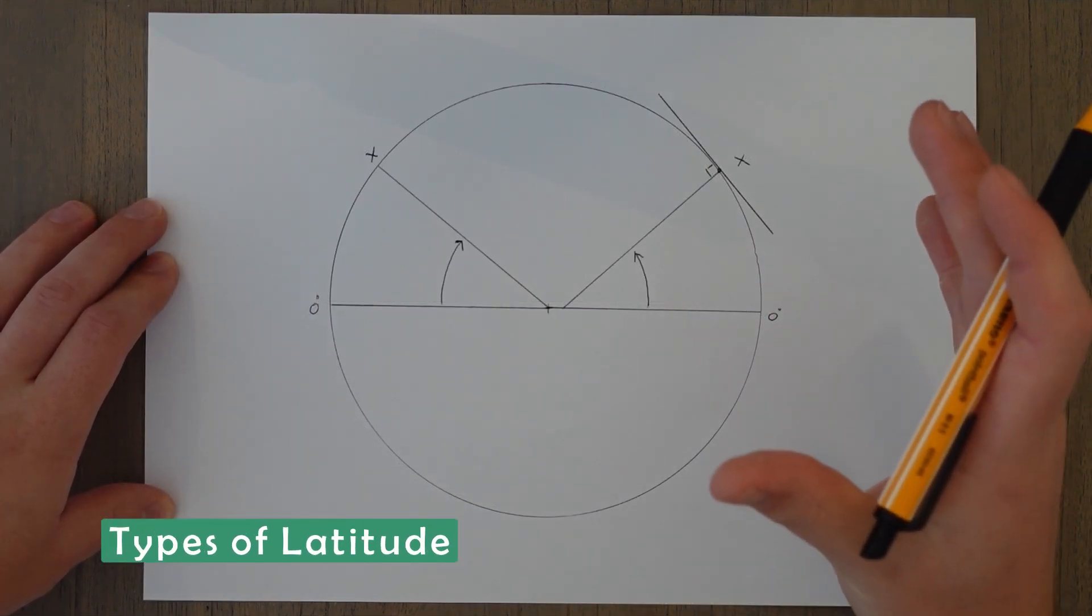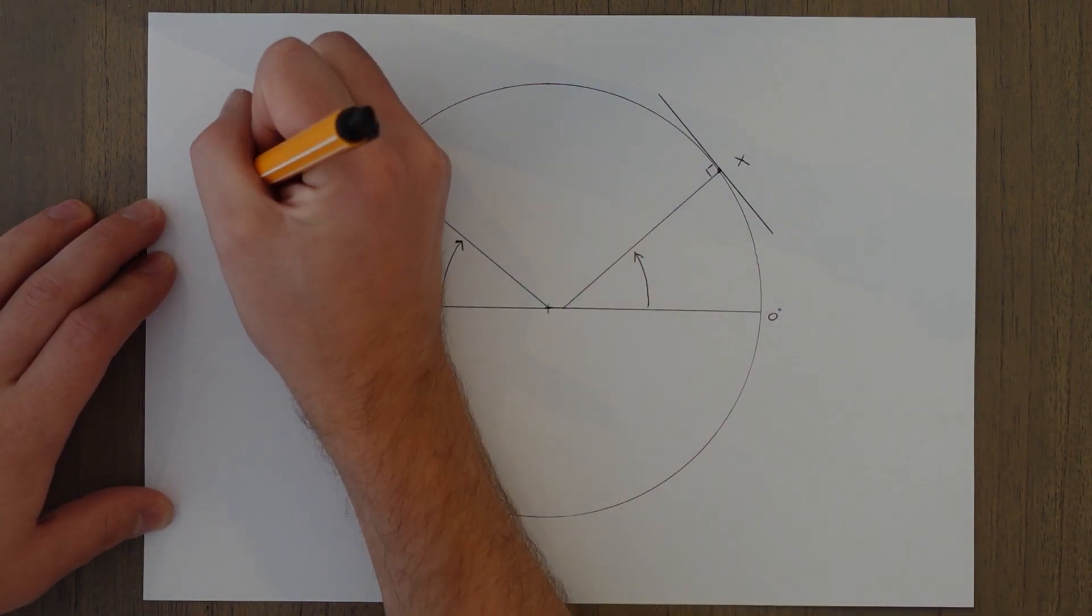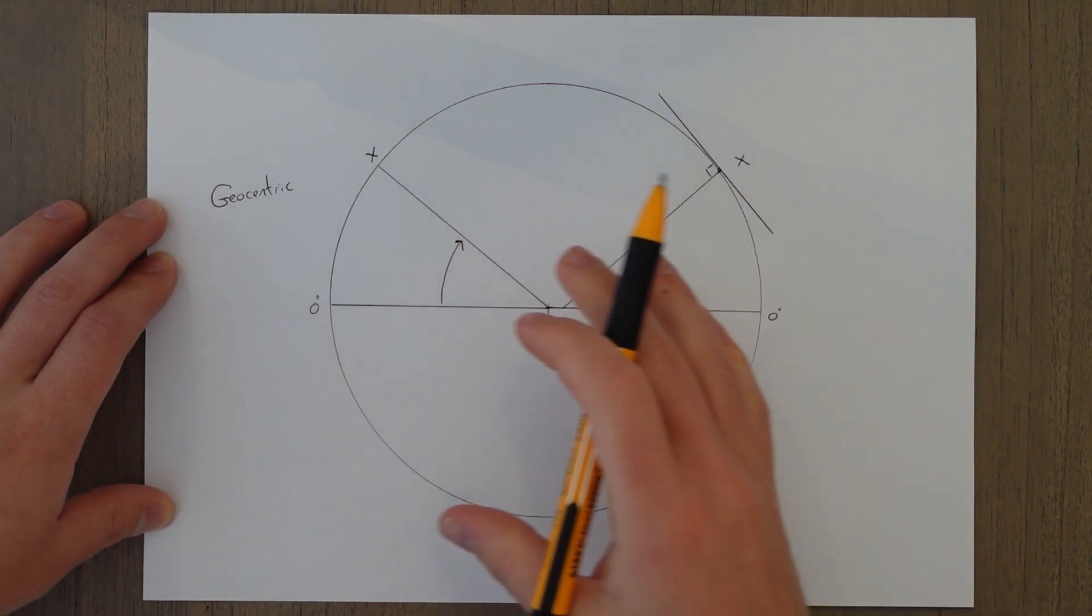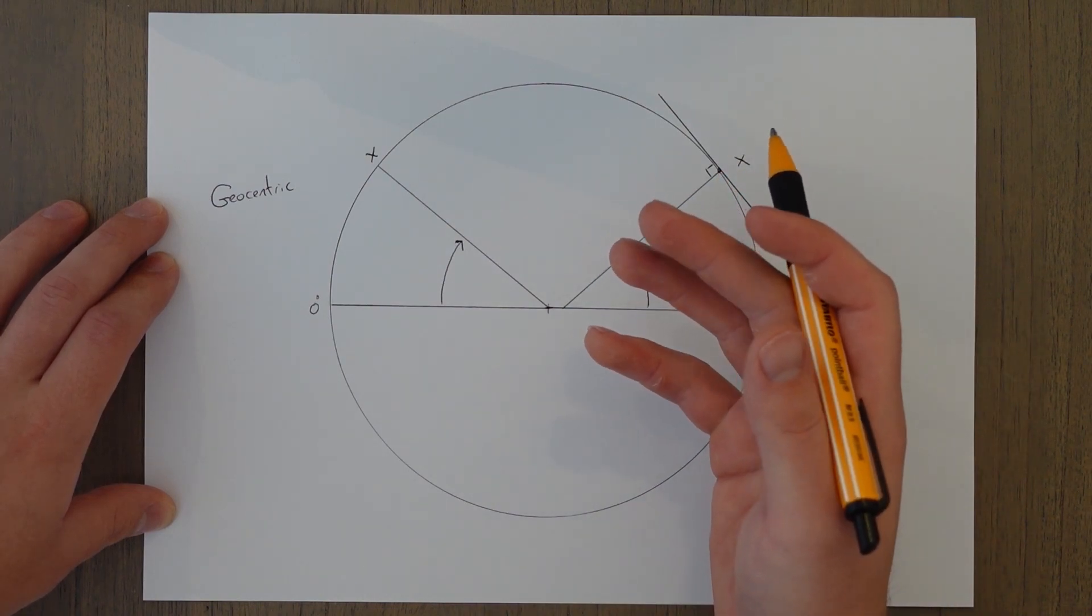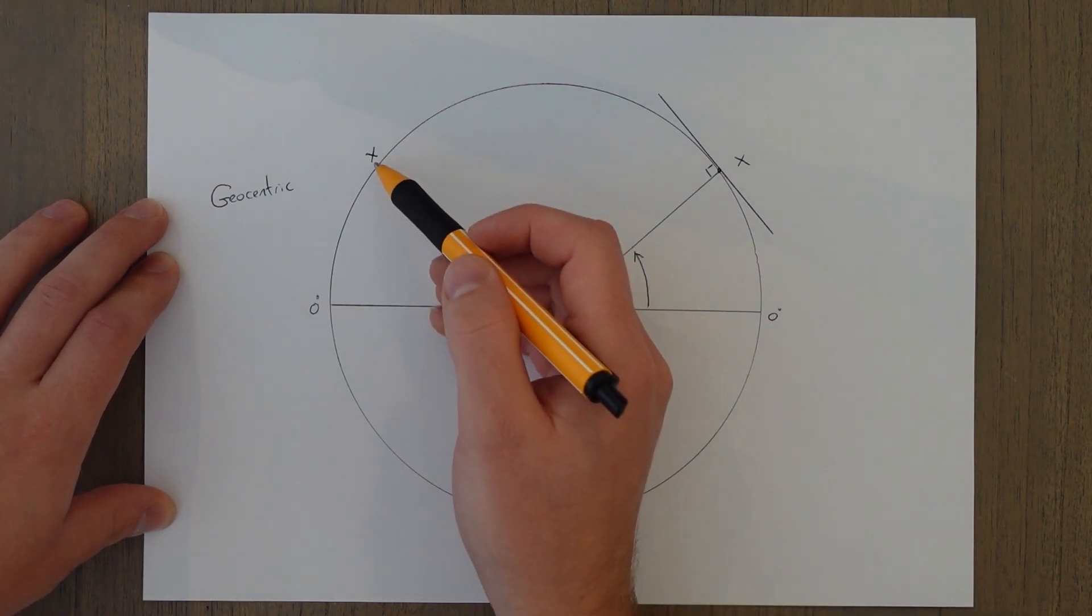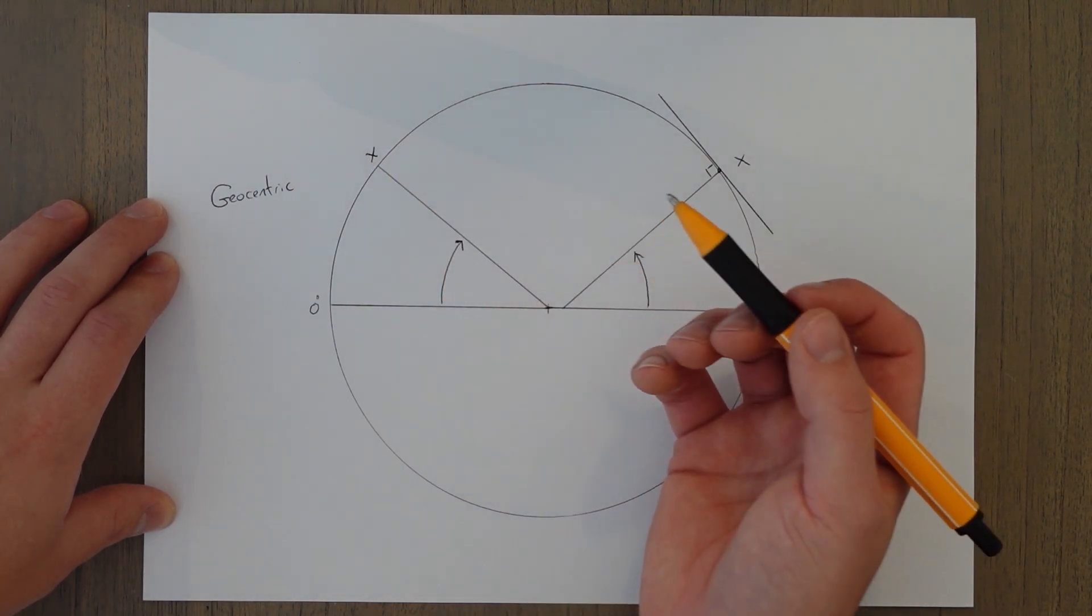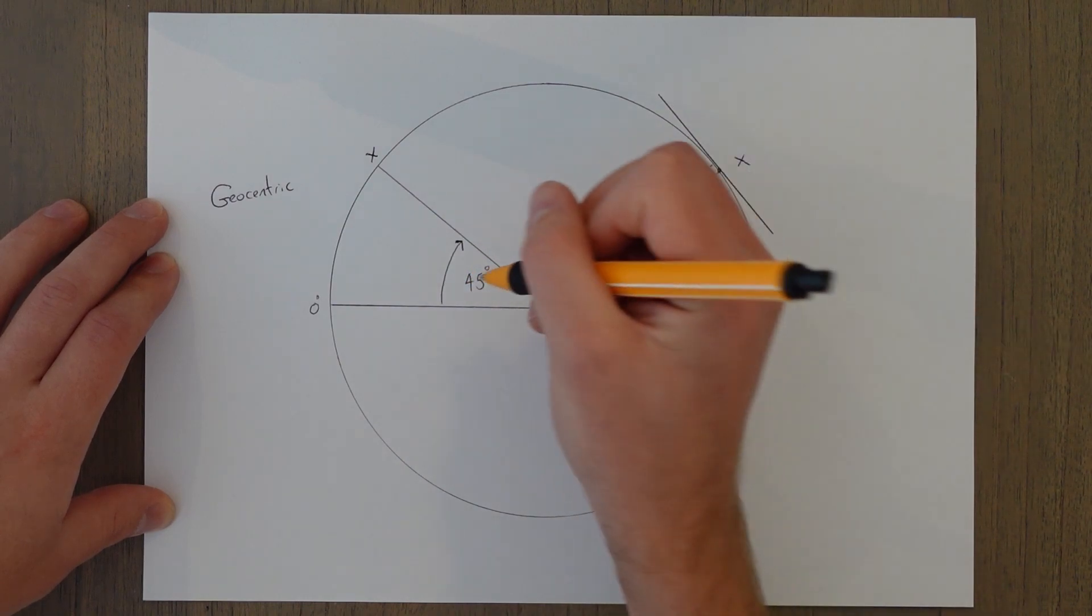There are two different types of latitude, confusingly. The first is what we call geocentric. This is the measure of latitude assuming the Earth is a perfect sphere. It is the angle from the centre to that position on the Earth. It's kind of what you would expect latitude to be. So this would be 45 degrees north.